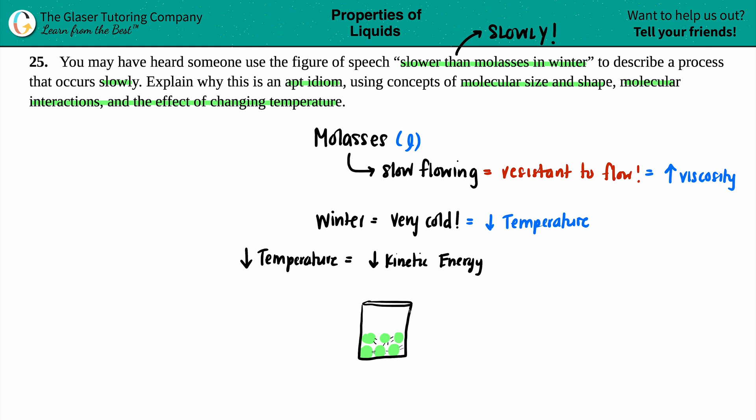But over time, if you are dropping the temp, what's going to happen is those molecules, the molasses molecules are not going to be moving as fast. They're going to be kind of coming together. They're going to be more together. And their movement is going to be very, very, very slow.